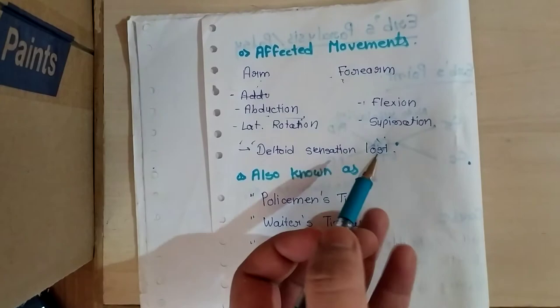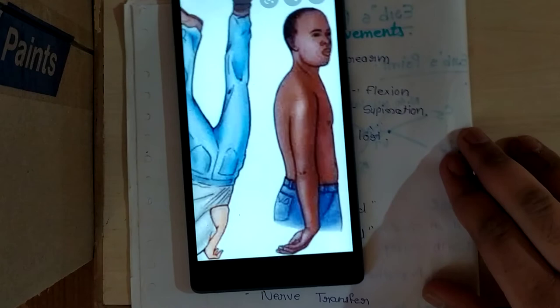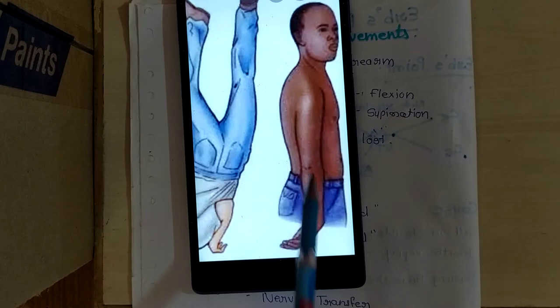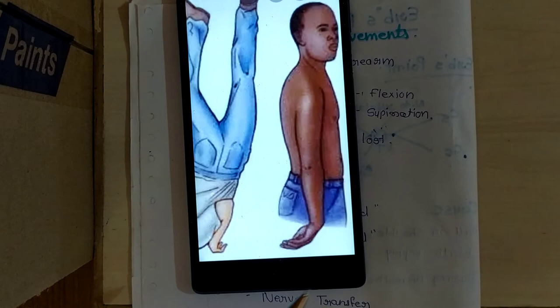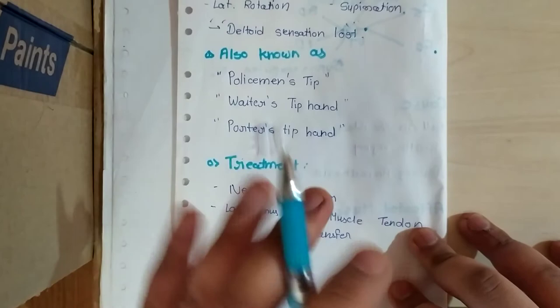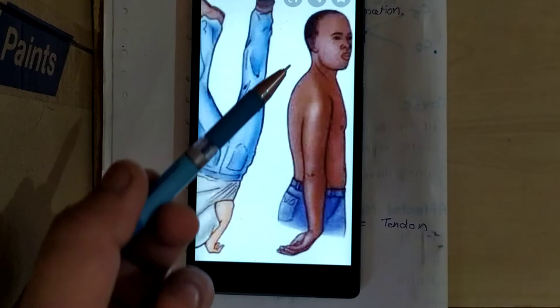The hand is always in adducted and medially rotated position. This position is also known as waiter's tip or policeman's tip.